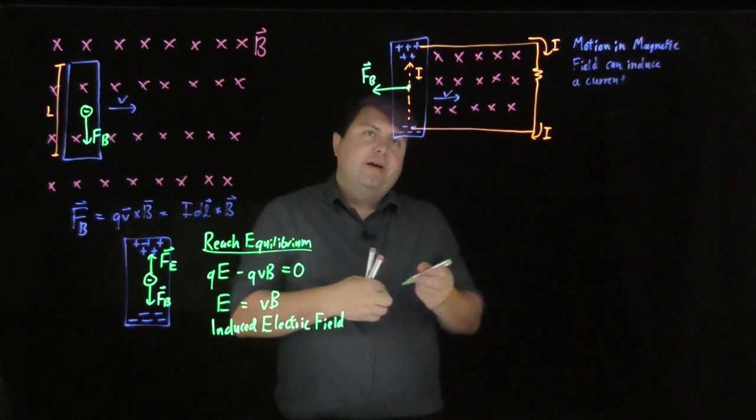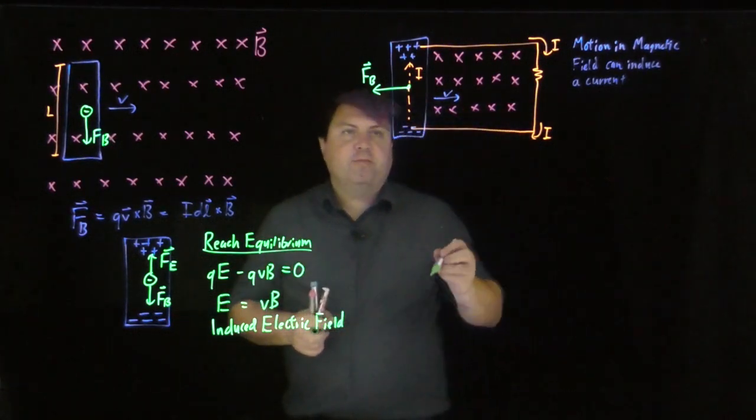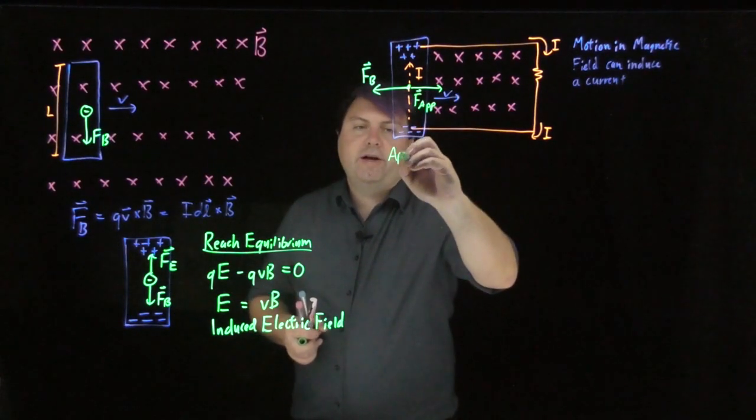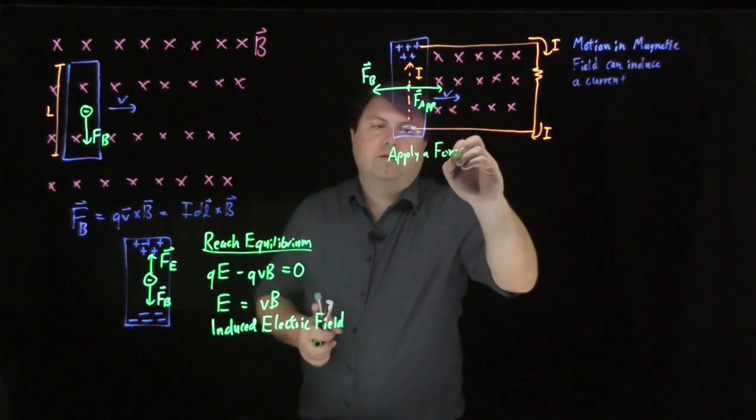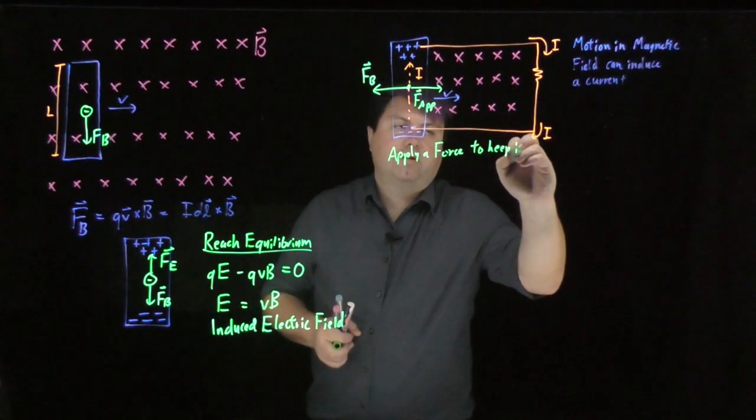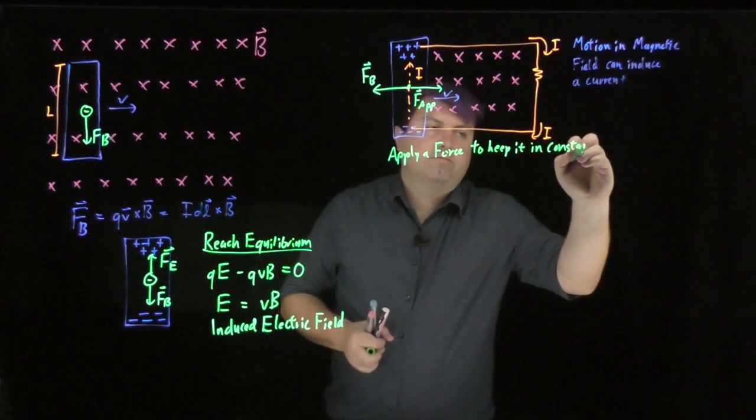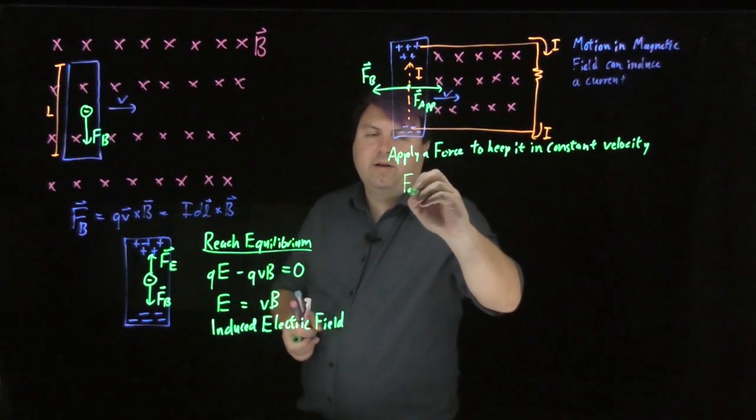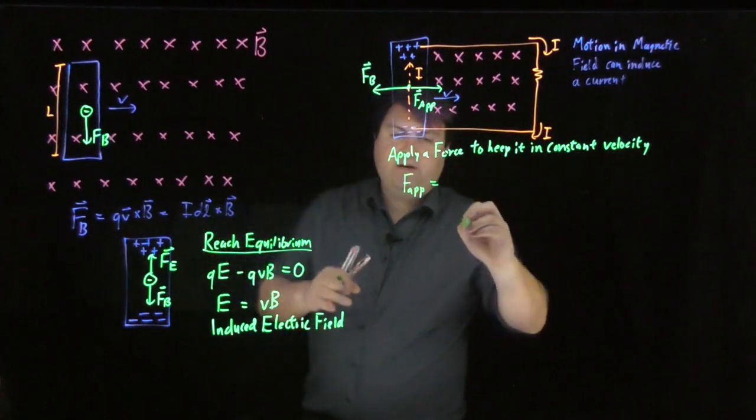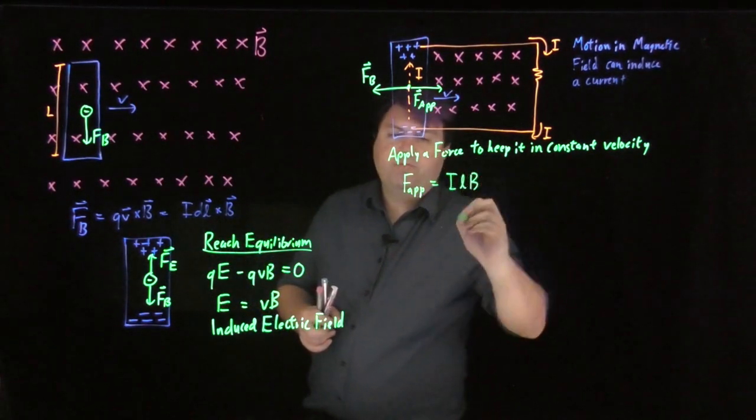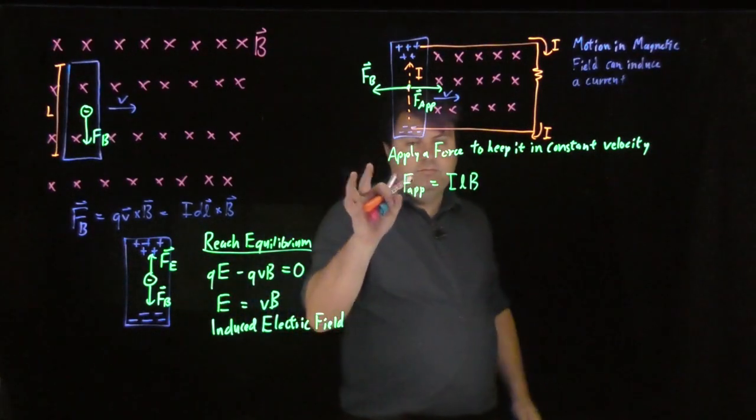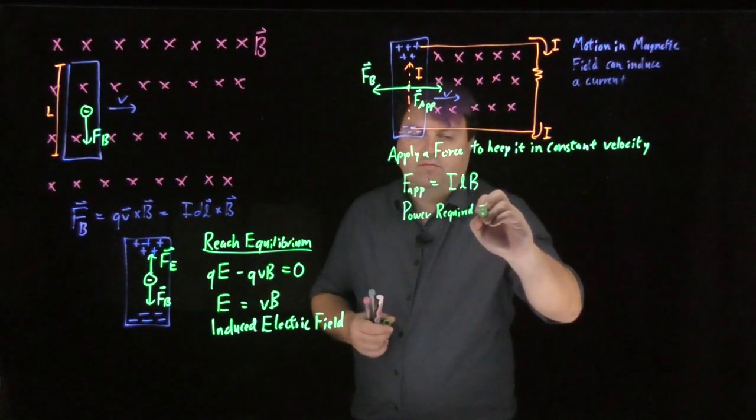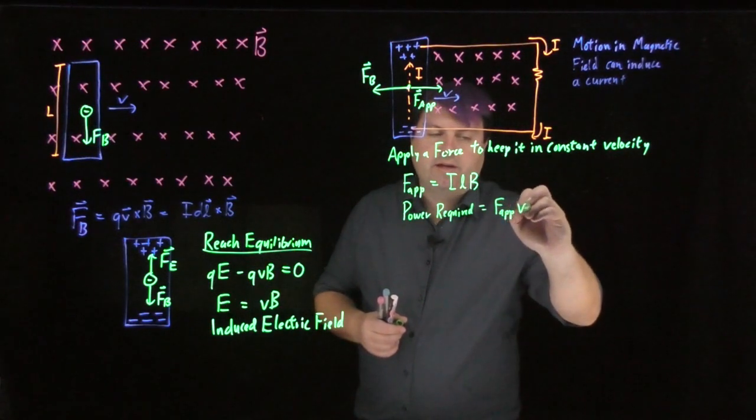Well, what we could do is instead of letting it slow down and be a much tougher problem, we could have an applied force. So we can apply a force to keep it in constant velocity. Well, we know then that that force applied must be equal to ILB. And then the power required would be the force applied times the velocity. So it would be ILB times the velocity.